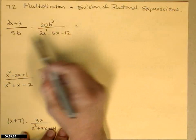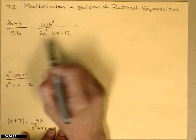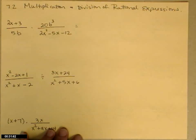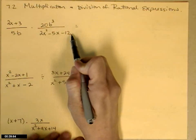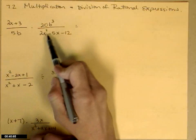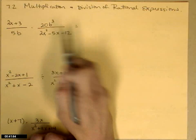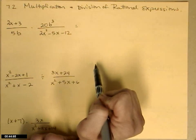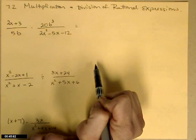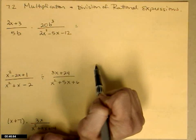Since we have rational expressions, we have polynomials, and the only way we can reduce is by canceling common factors, which means we need to look for anything that will factor. The denominator of the second fraction is quadratic — it's a trinomial — so that means it's probably a good candidate for something that will factor.